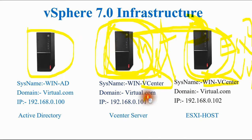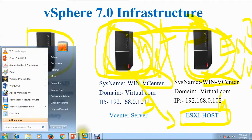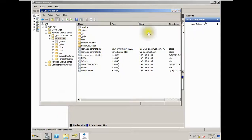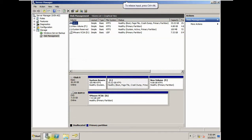This is the ESXi host you have to deploy on. Let me show you both the error and the solution — the installation procedure — in this demo. I have three virtual machines deployed here. This is my Active Directory.